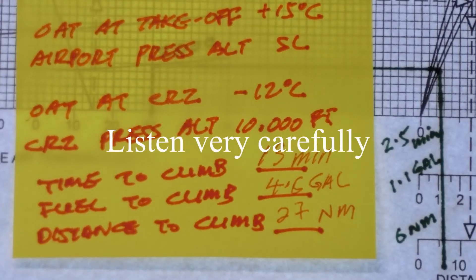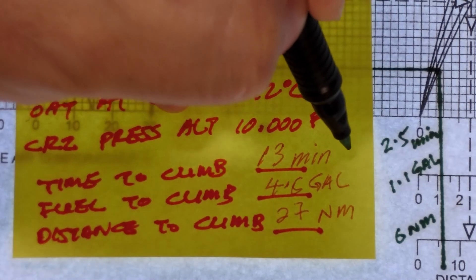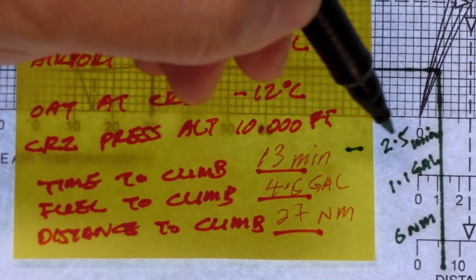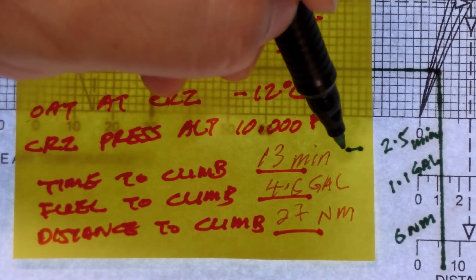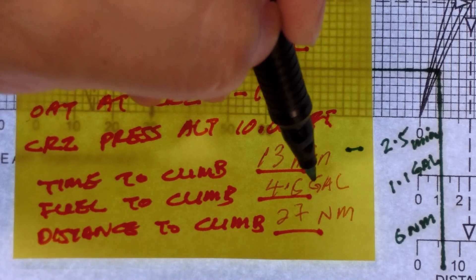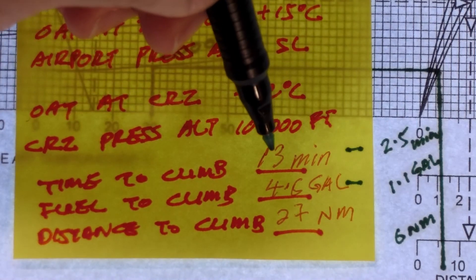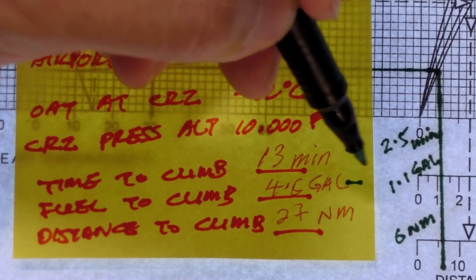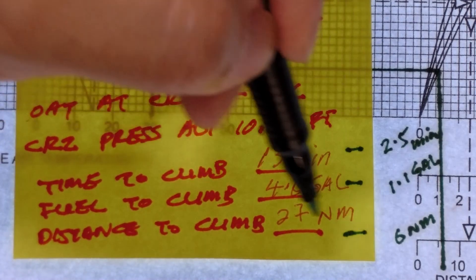So the time to climb then if we wanted to climb from an airport at 2,000 feet to a cruise altitude of 10,000 feet would be the difference between these two. So 13 minutes minus 2.5 minutes will get me the time to climb from 2,000 feet to 10,000 feet. The amount of fuel that we would take to climb from 2,000 to 10,000 feet would be 4.6 gallons minus 1.1 gallons and the distance to climb would be 27 nautical miles minus 6 nautical miles.